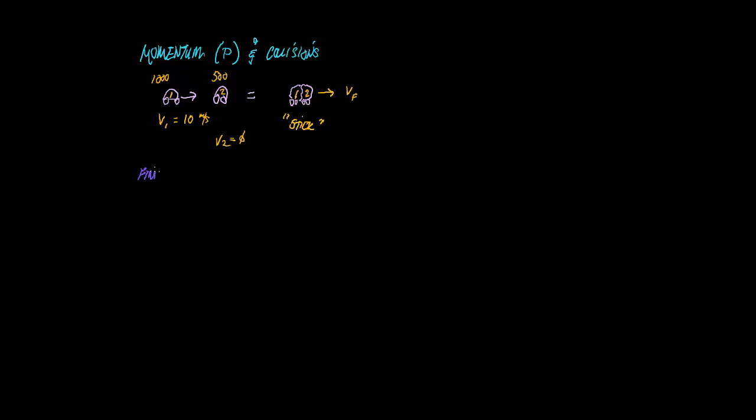So what we're going to do is find the final of both cars, but since they stick, V1 final equals V2 final, which we're just going to call as the final. And this makes the stick problems a lot easier than the bounce problems.